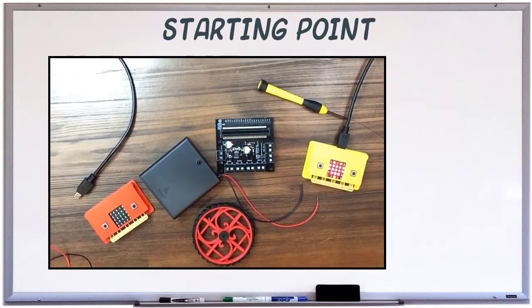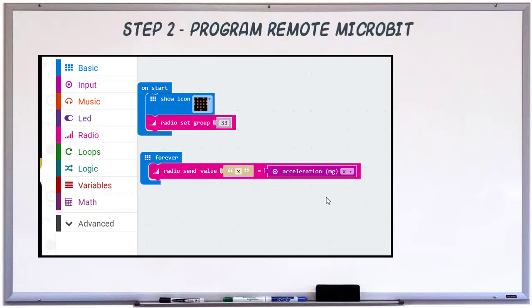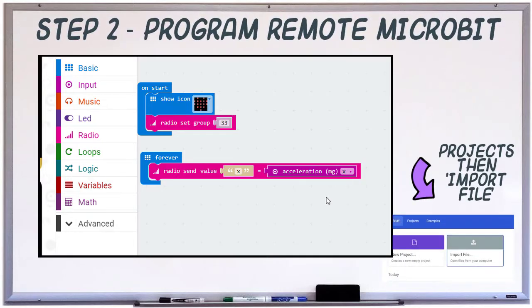Here's our setup. One microbit is our robot and the other is the remote. We'll start with the code where we left off in TurboTinker number 9. You can download that from TinkerPi.com. Import the remote hex file into the MakeCode website.